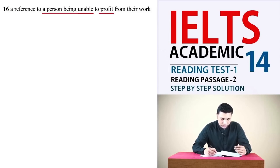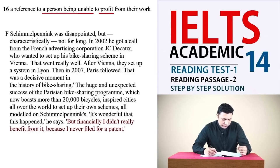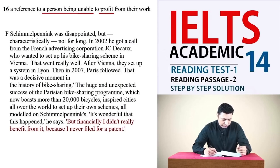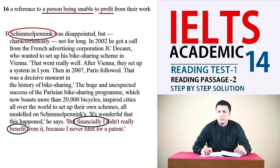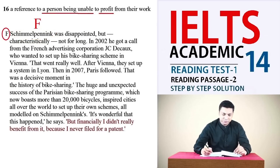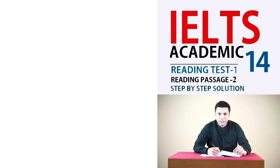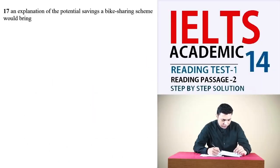The next one: 'A reference to a person being unable to profit from their work.' The keywords are 'unable' and 'profit.' Look at the very last line of paragraph F: 'But financially I didn't really benefit from it because I never filed for a patent.' Here a person named Luud Schimmelpennink is talking about his inability to make profit financially from his work, so the answer is F.